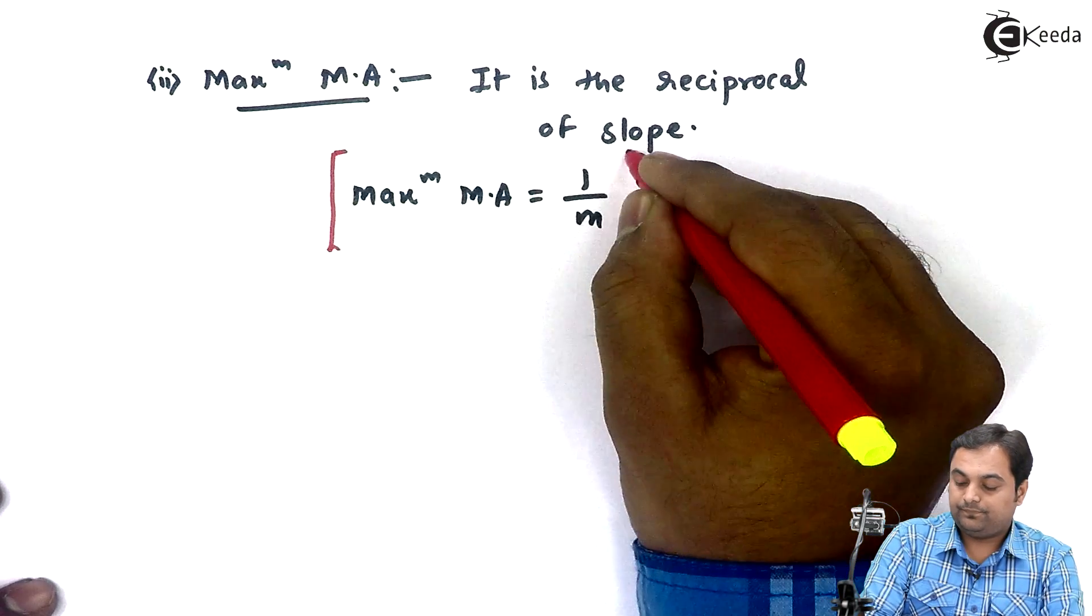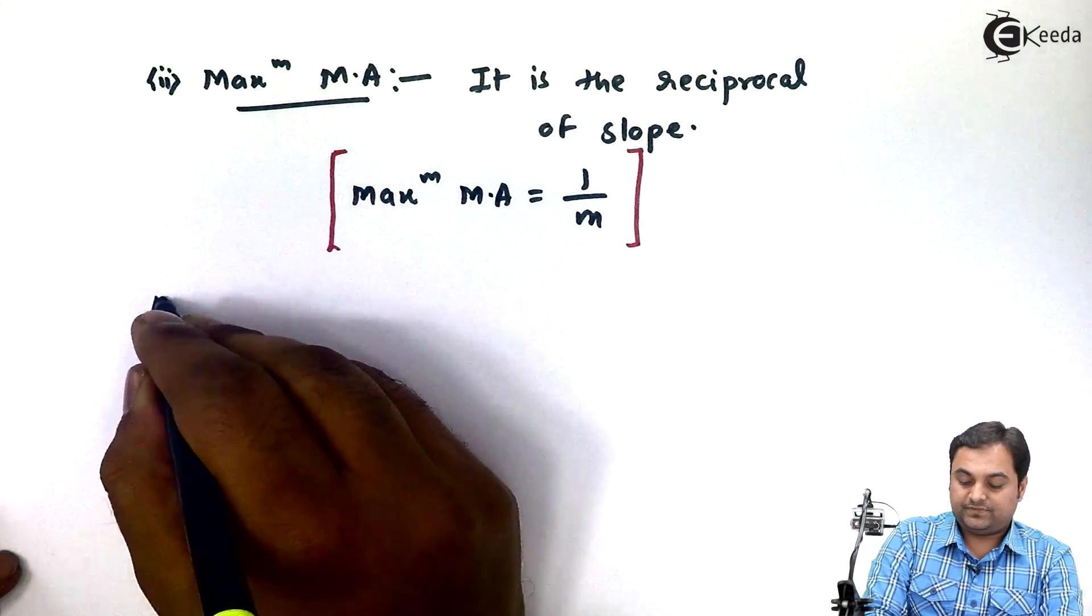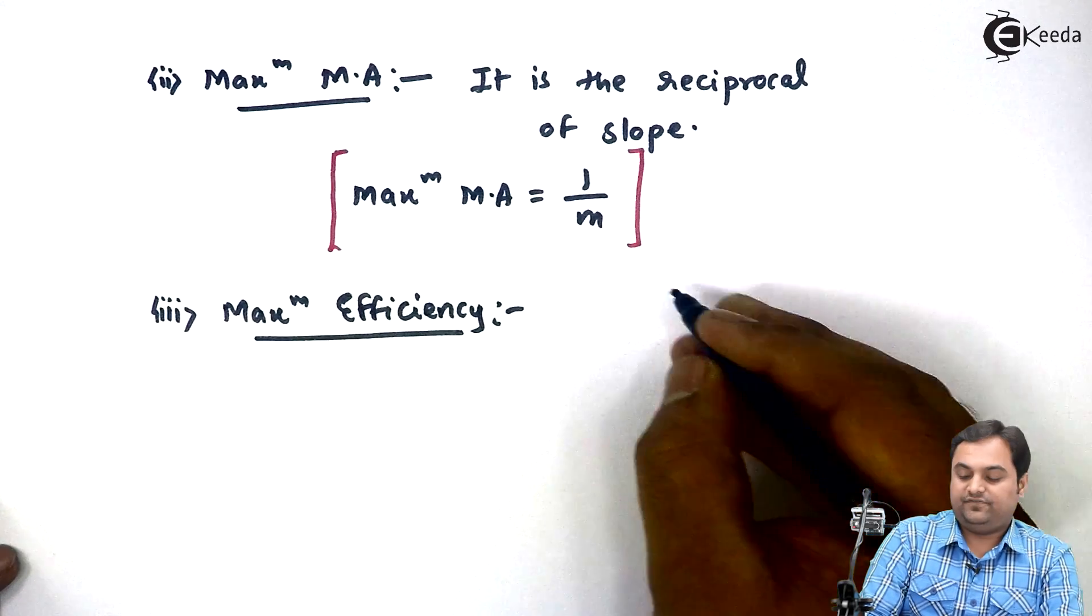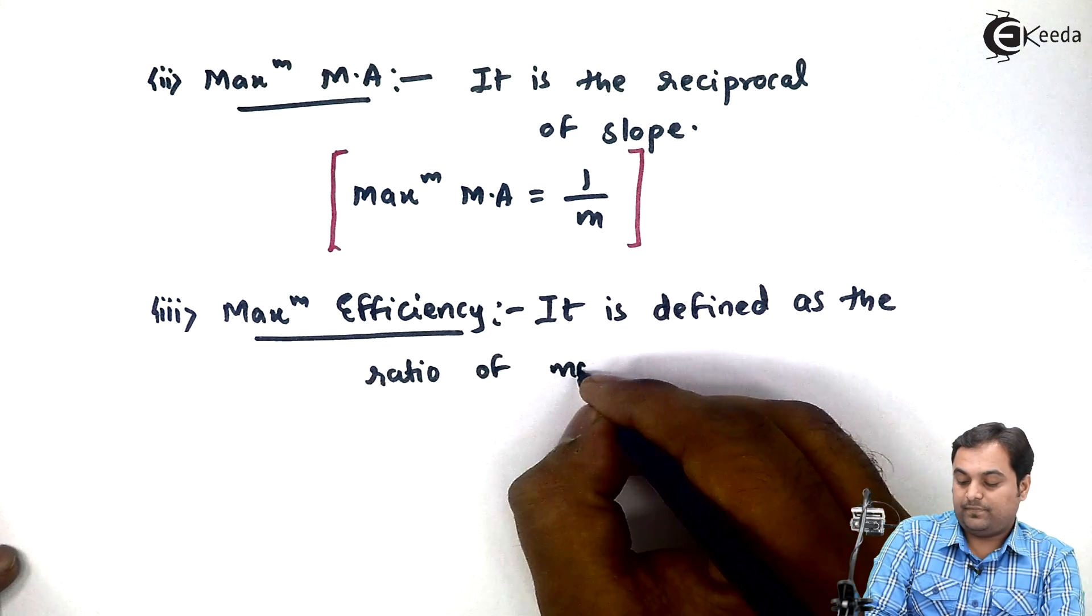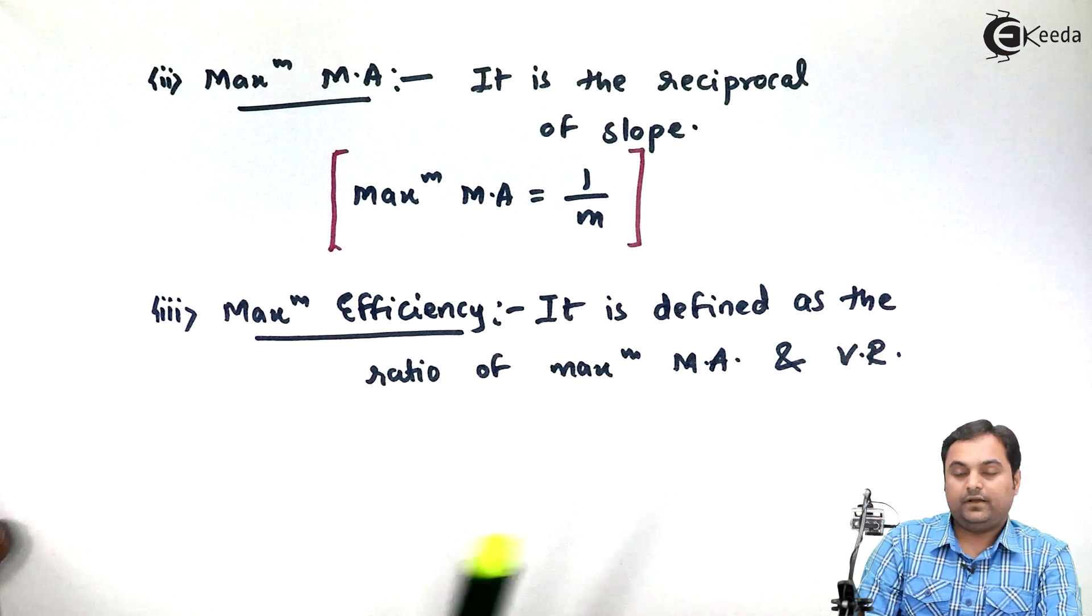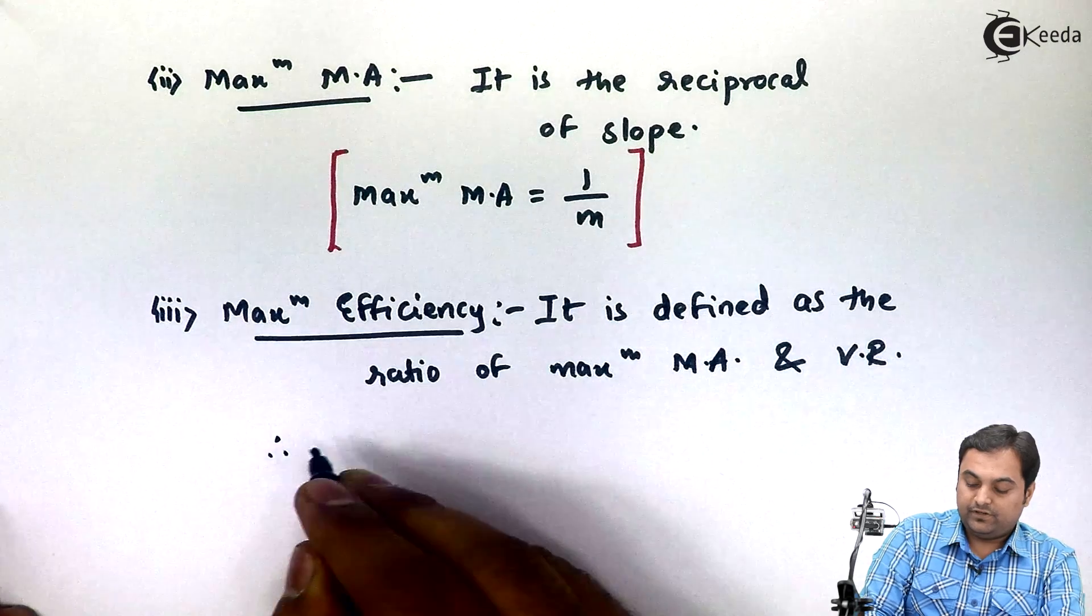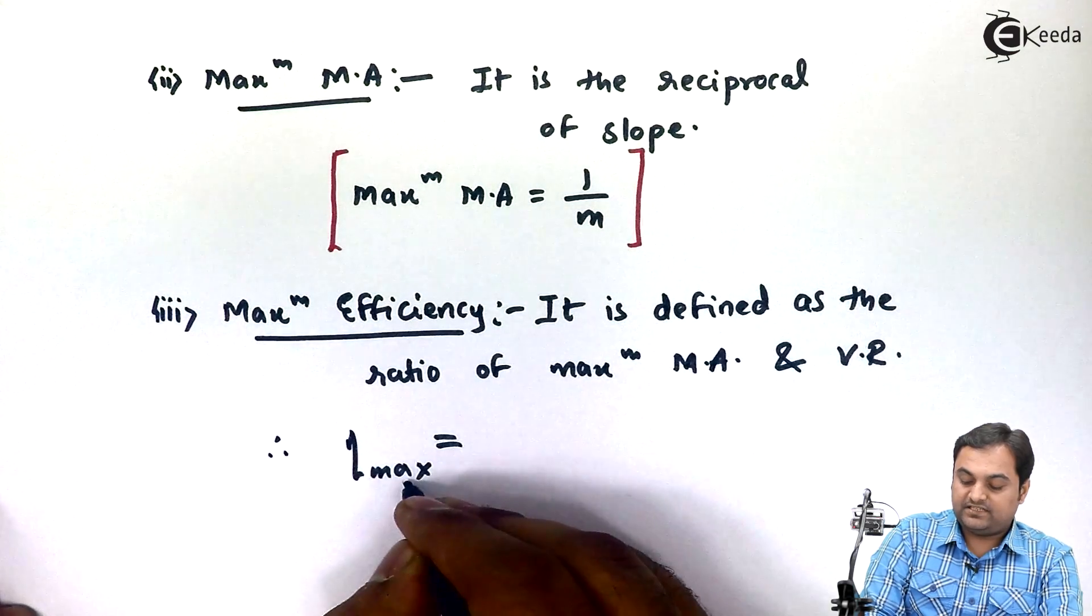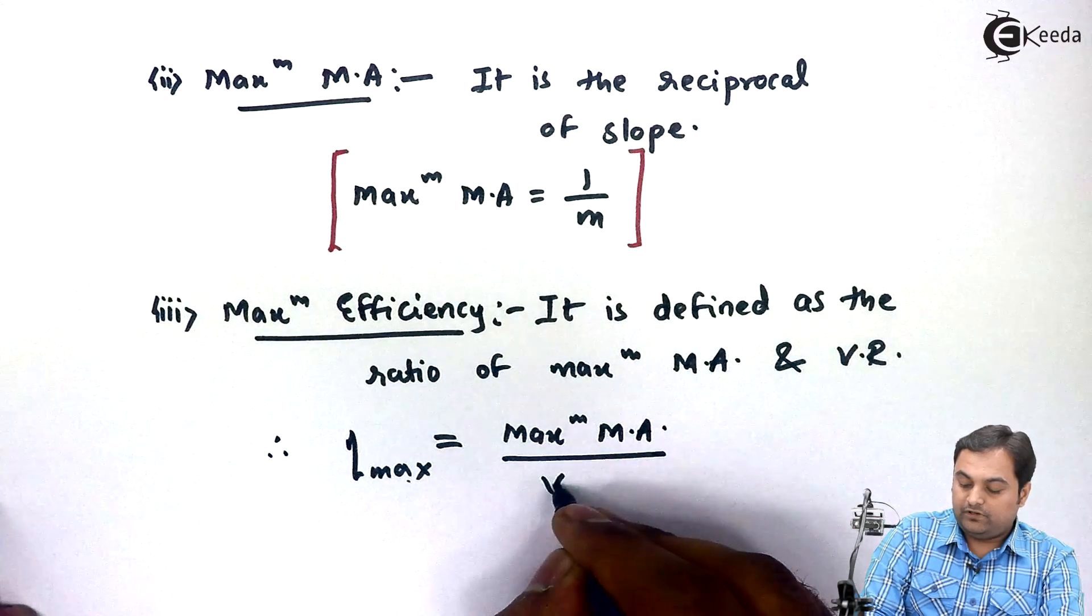Next, maximum efficiency. It is defined as the ratio of maximum mechanical advantage and velocity ratio. Be careful here, the velocity ratio is not maximum, only the mechanical advantage need to be maximum. So therefore I'll write down maximum efficiency as eta max. So eta max, maximum efficiency, is equal to maximum mechanical advantage upon velocity ratio.